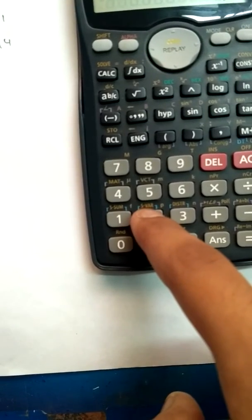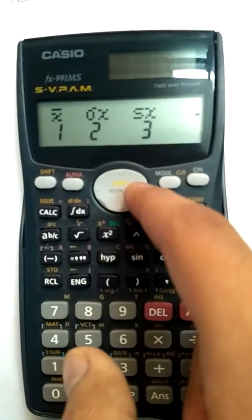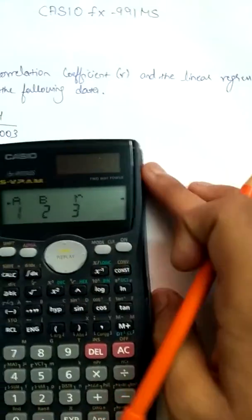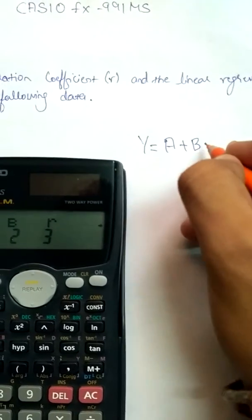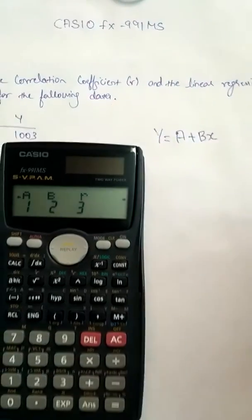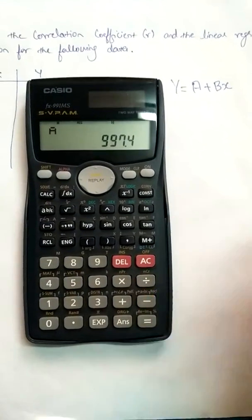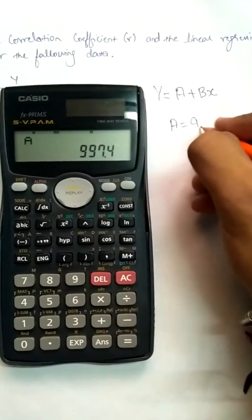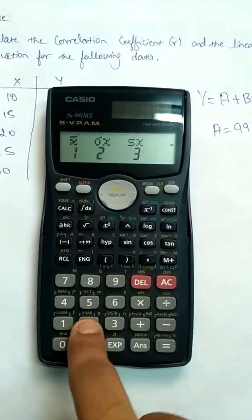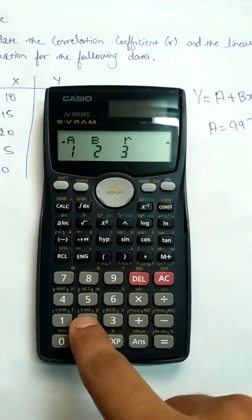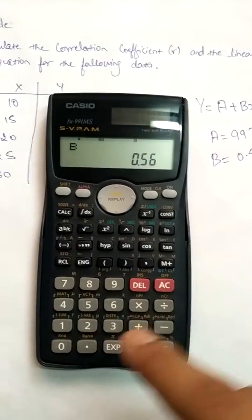Next I press Shift then 2 to access the variables, then move right. As we know, the general equation of linear regression is y equals a plus bx. To find the value of a, I'll press 1 and then equals — a comes out to be 997.4. To find the value of b, I'll press Shift, 2, then right, right, then 2, equals — b comes out to be 0.56.